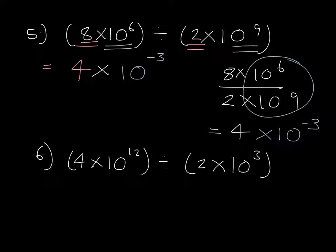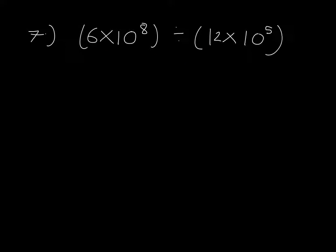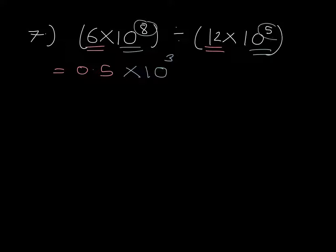Question 6: 4 times 10 to the 12 divided by 2 times 10 to the 3. 4 divided by 2 is simply 2. Then 10 to the 12 divided by 10 to the 3 — we subtract the indices — giving us 2 times 10 to the power of 9.